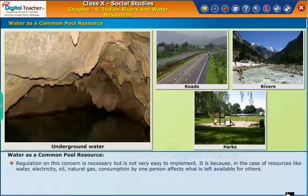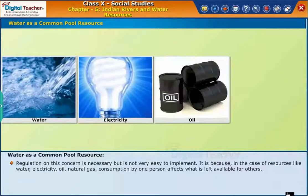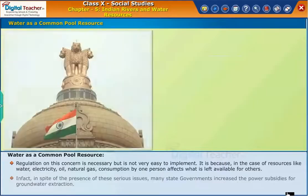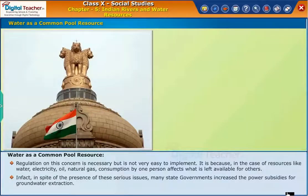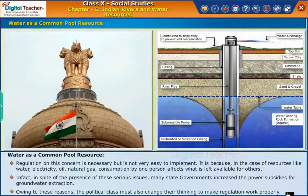Regulation on this concern is necessary but is not very easy to implement. In the case of resources like water, electricity, oil, and natural gas, consumption by one person affects what is left available for others. In fact, in spite of the presence of these serious issues, many state governments have increased power subsidies for groundwater extraction. Owing to these reasons, the political class must also change their thinking to make regulation work properly.